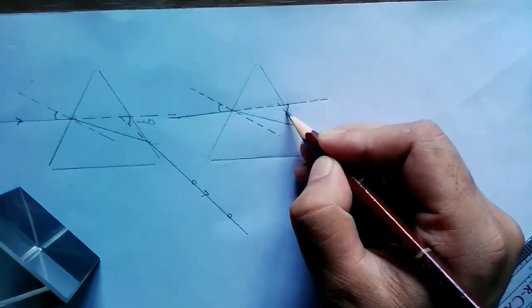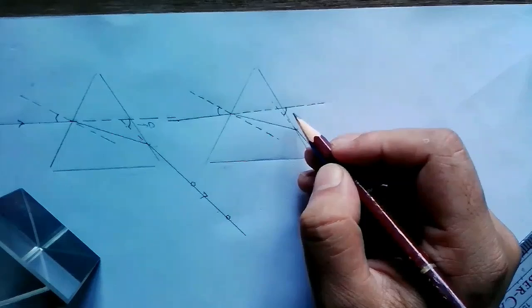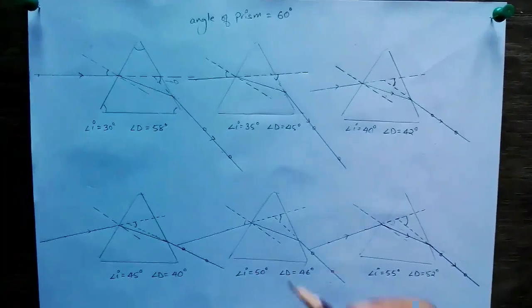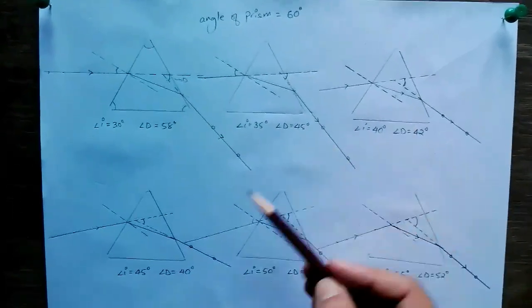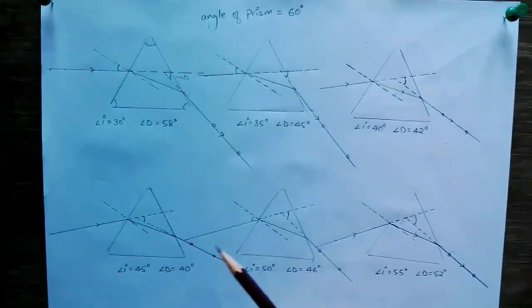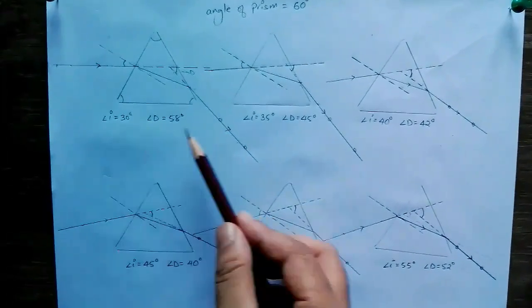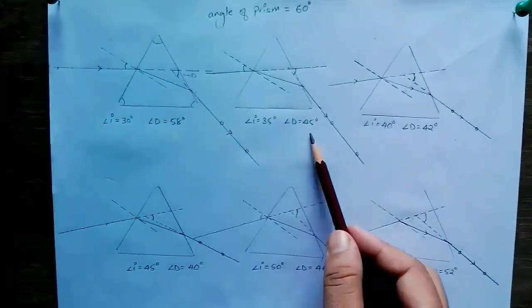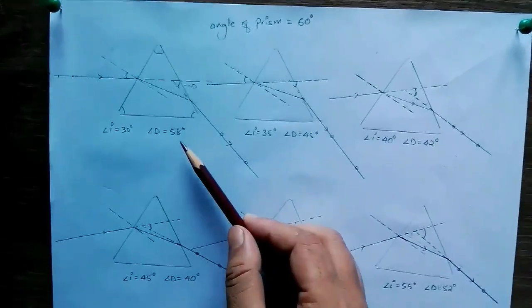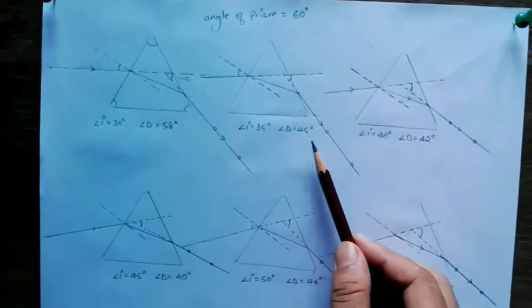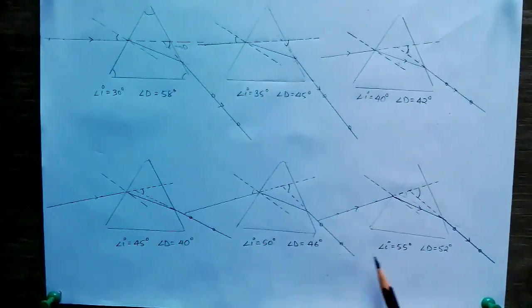This is the angle of deviation for incident angle 35 degrees. Students, follow the previous steps and take the other four readings. While doing this practical, you will observe that on increasing the angle of incidence, the angle of deviation at first decreases, attains a minimum value, and then again starts increasing for further increase in angle of incidence.